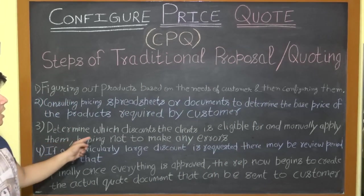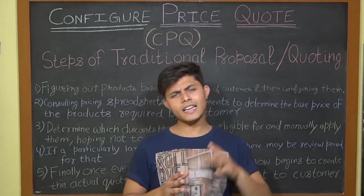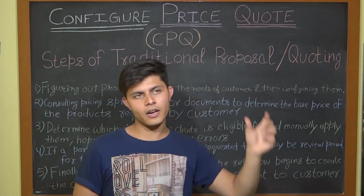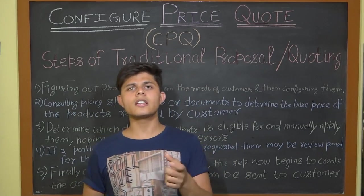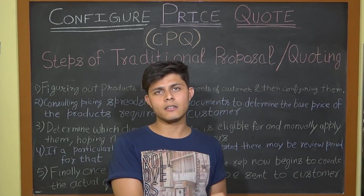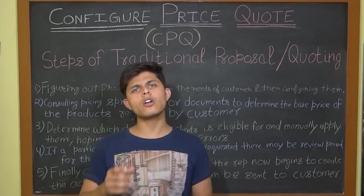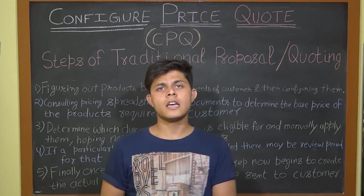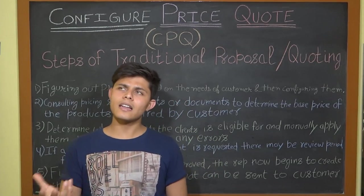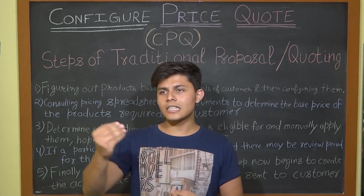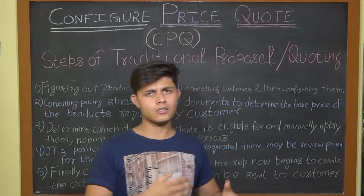Step three is determining which discounts the client is eligible for and manually applying them, hoping not to make any errors. In this competitive environment, you can't always sell at list price — you need to apply discounts to close the deal. Sales representatives manually enter whatever discount they think is appropriate for each client, analyzing eligibility for different discount percentages on specific products, services, or the complete group.